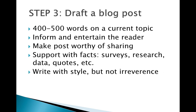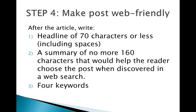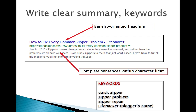Write with style to show the personality of the person. Step four, you're also going to write a headline — just as you did with the press release — and a summary of 160 characters that would help the reader discover the post, and four keywords. For example, lifted right out of a Google search: 'How to fix every common zipper problem' from Lifehacker. That is very benefit-oriented. The summary is written in complete sentences, not chopped at the beginning or end. The four keywords would all be related to the topic — a stuck zipper, zipper problem — the kinds of things people would enter into a Google search.